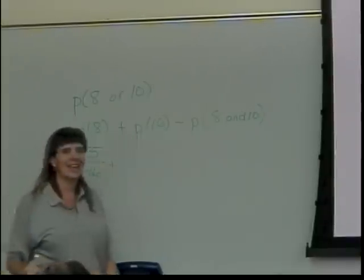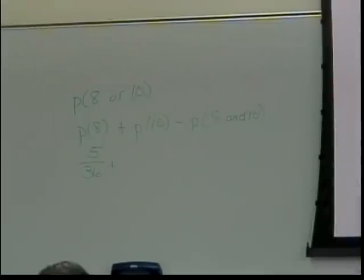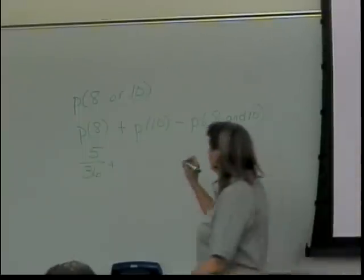What's the probability of getting a 10? Well, here's my 10 diagonal. I've got the 6,4, 5,5, 4,6. So there are 3 things in there. That's 3 out of 36.